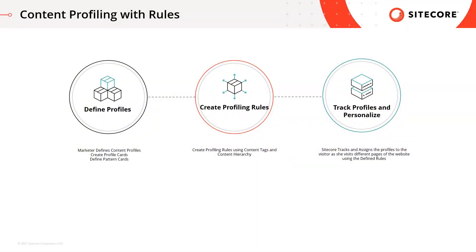With rule-based content profiling we have tried to make the content profiling process easier and more efficient for the marketer. In this feature a marketer will be able to define rules based on already known information, then assign a profile card and Sitecore will execute these rules as the visitor visits the website. In Sitecore XP 10.1 a marketer can define these rules based on tags assigned to pages.